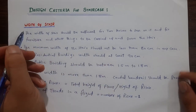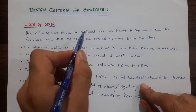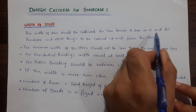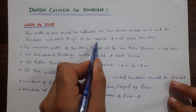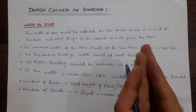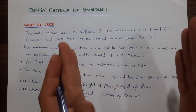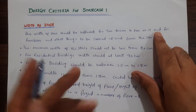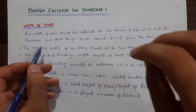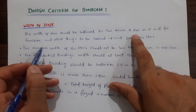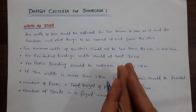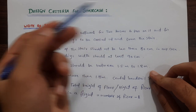The first criterion is the width of the stair. The width of the stair should be sufficient for two persons to pass on it, and for furniture and other things to be carried up and down. If it does not allow two persons to pass, it cannot work for you, so the width should be sufficient for two persons.